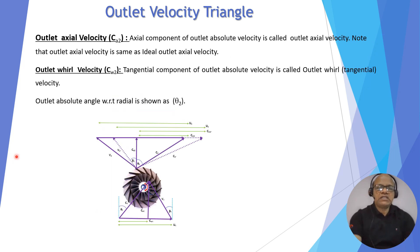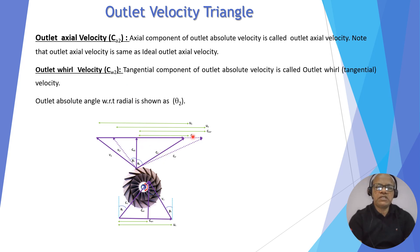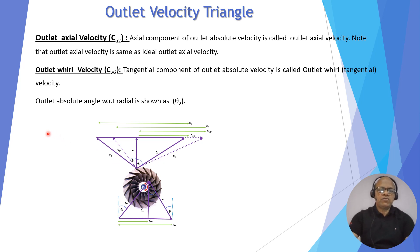The axial component of C2 is Ca2, which is the same as the ideal case. The outlet whirl velocity Cw2 is the tangential component of C2. Theta 2 is the outlet absolute angle with respect to radial.